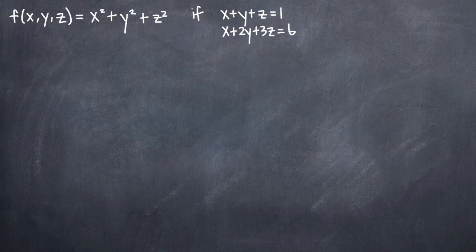In this particular problem, we've been asked to use Lagrange multipliers to find any extrema of the function f equal to x squared plus y squared plus z squared, subject to two constraint equations: the first is x plus y plus z equals 1, and the second is x plus 2y plus 3z equals 6.